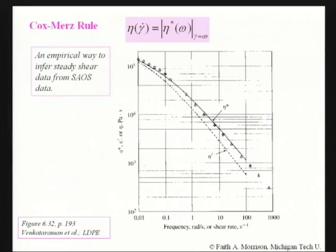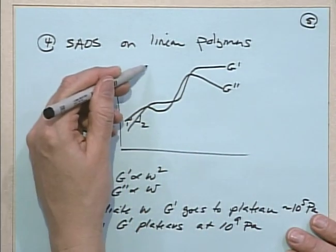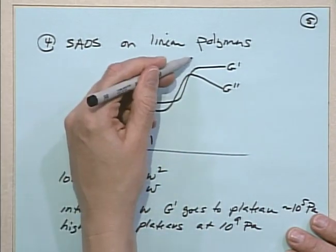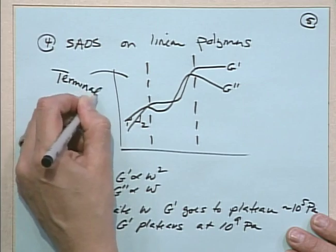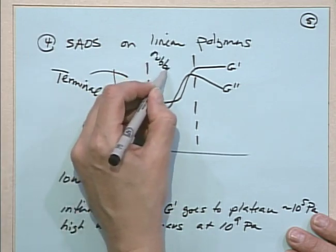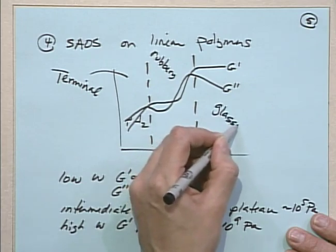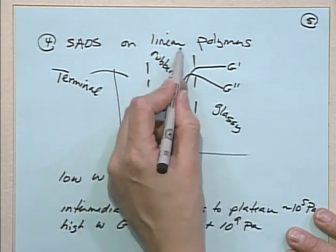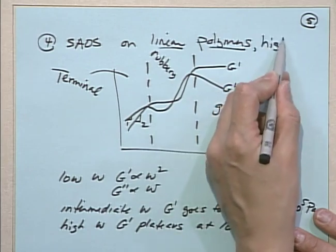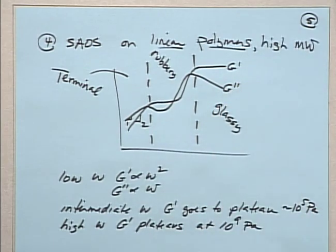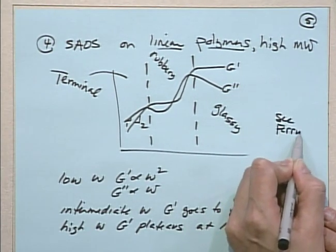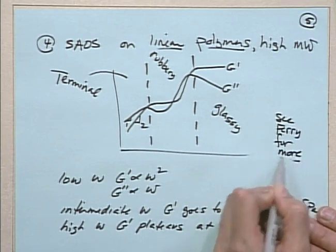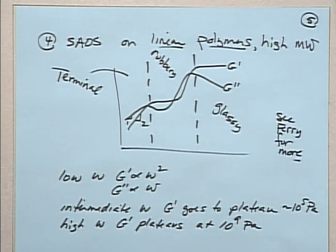Going back to the summary sheet, what I'd like you to know is the general shape and the identity of the three zones - terminal, rubbery, and glassy - for high molecular weight linear polymers. See John Ferry's book for more detailed information.